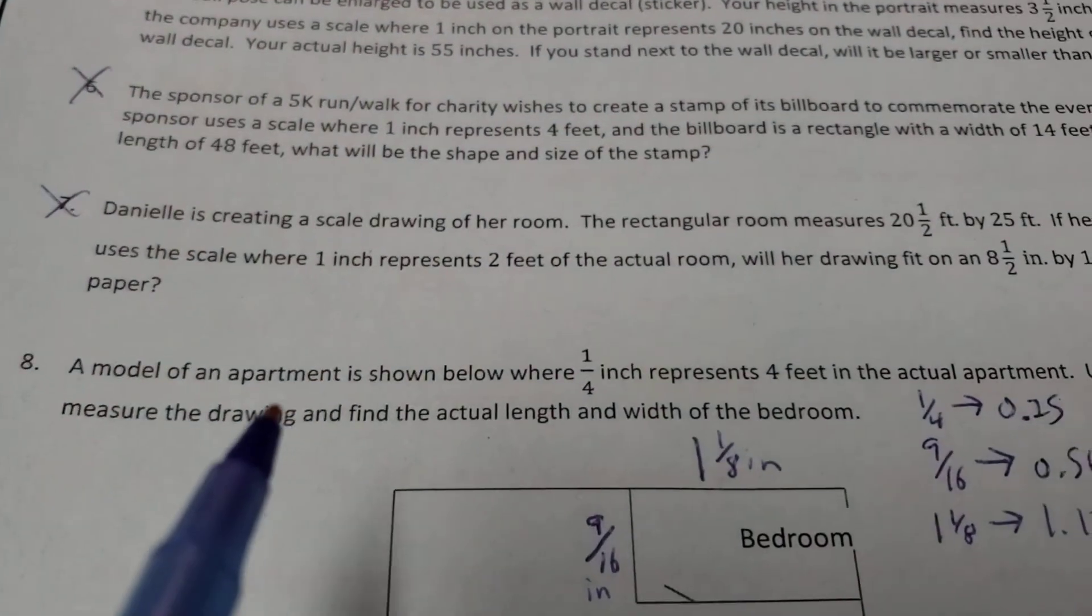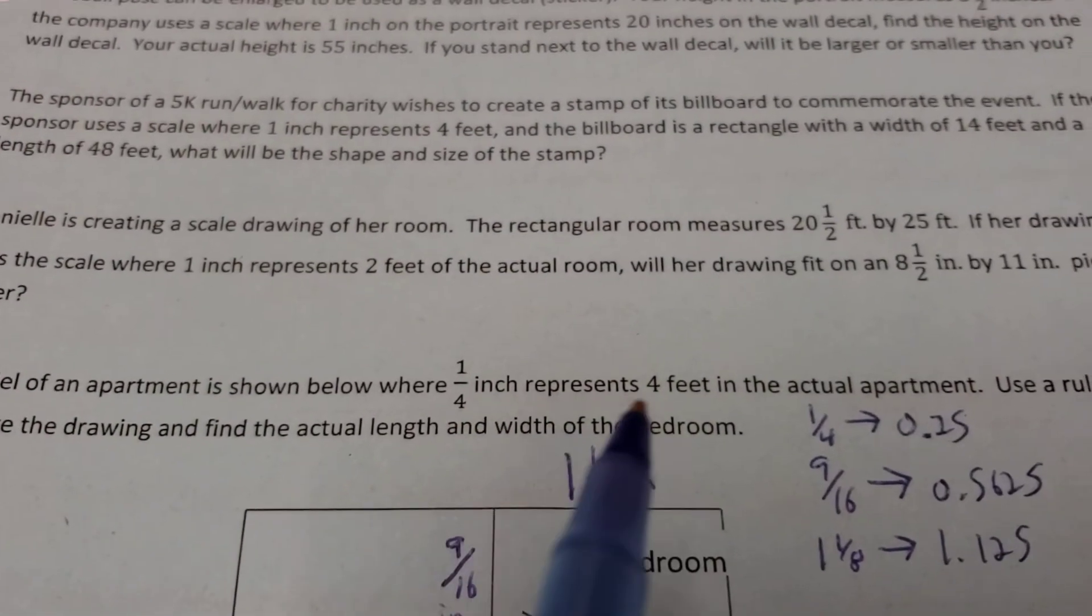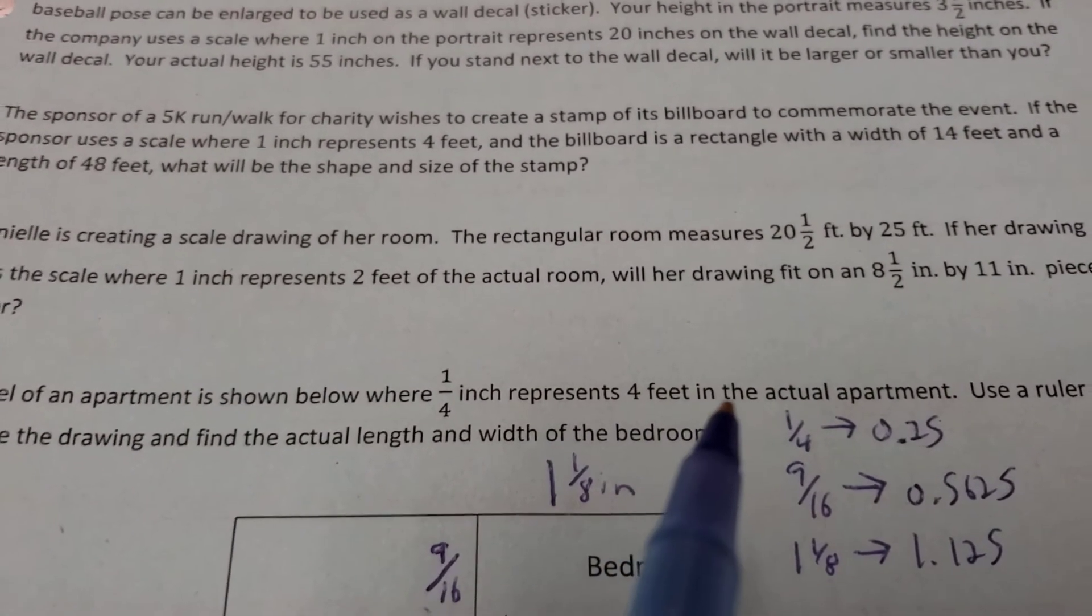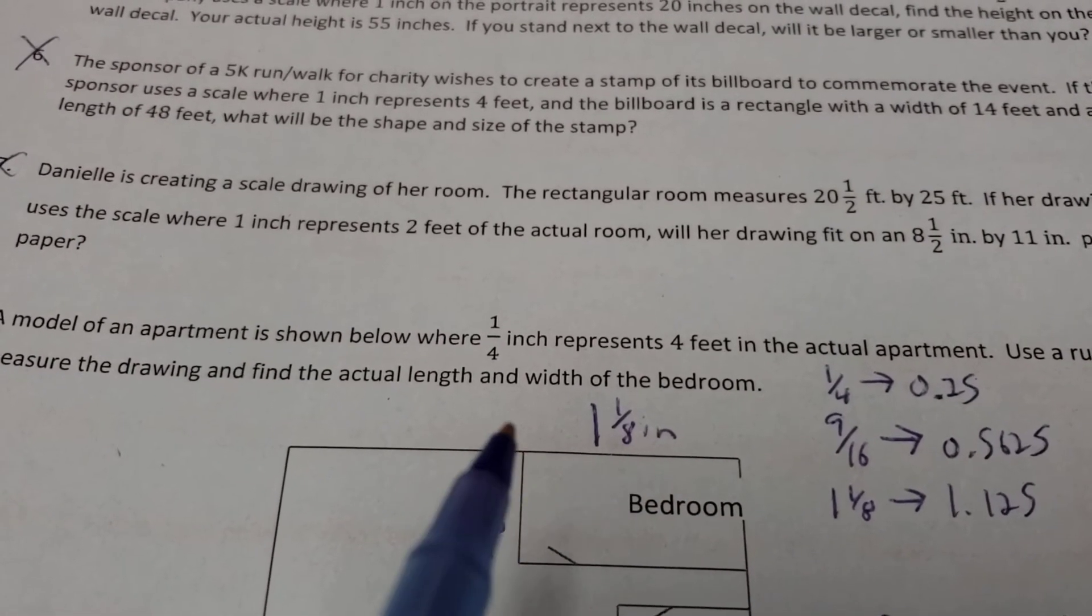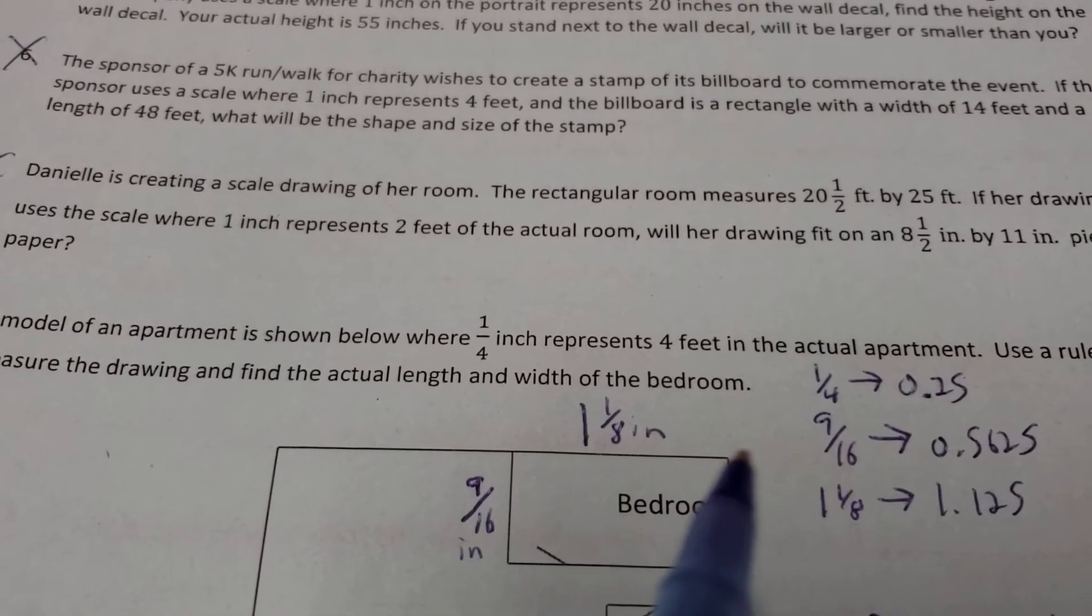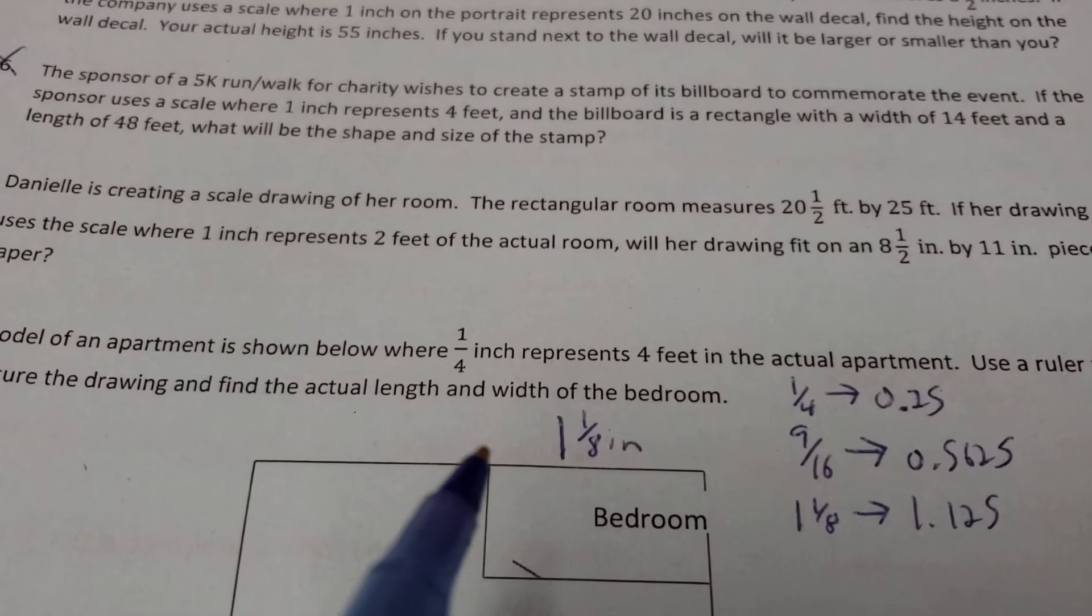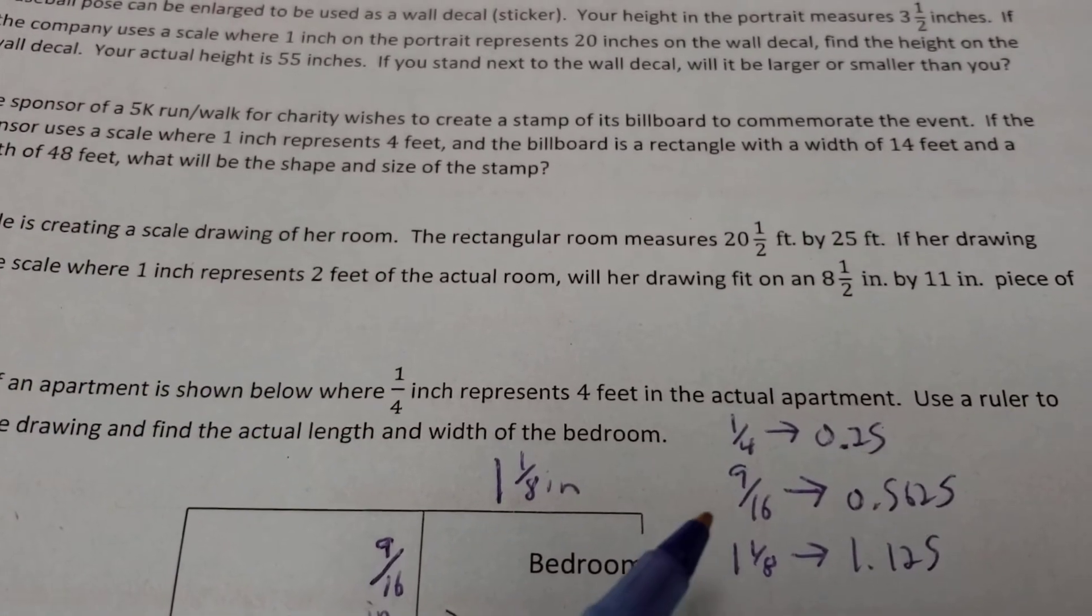Last up. We have a model of an apartment shown where 1/4 of an inch represents 4 feet in the actual apartment. That's what the blueprints would say. So if you measure this out, we're going to go 9/16ths of a measurement here. And the bedroom here is 1 1/8 inches across. Now, we're going to get all these fractions. We're going to convert them to decimals. These are ones that we can actually convert easy.